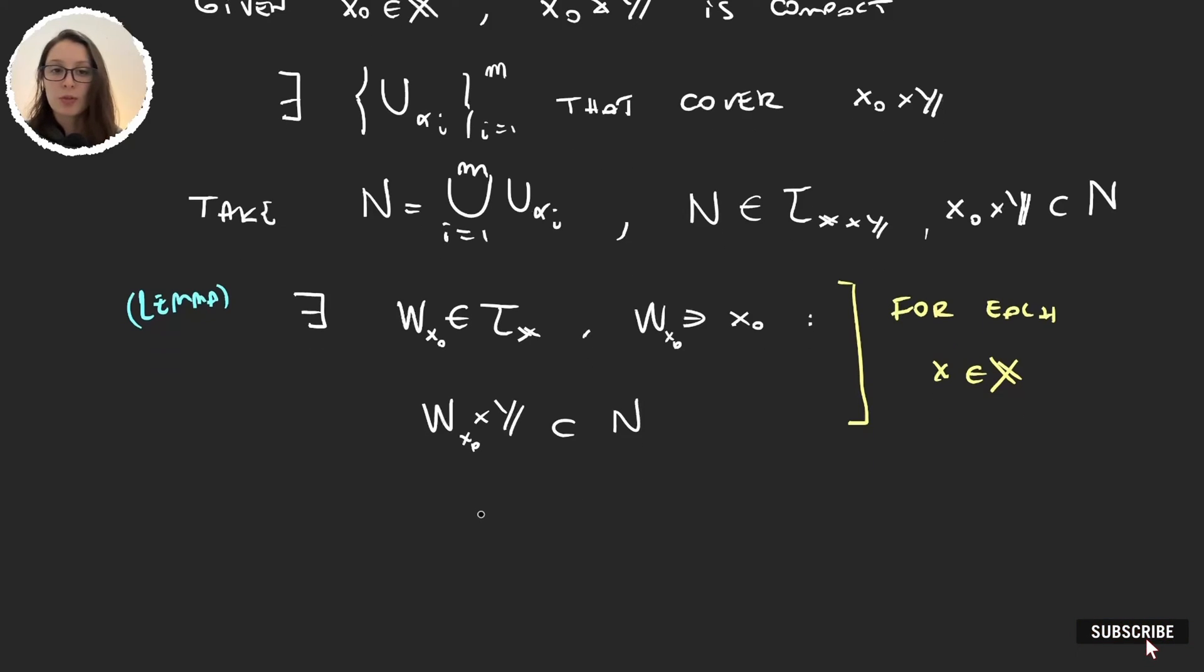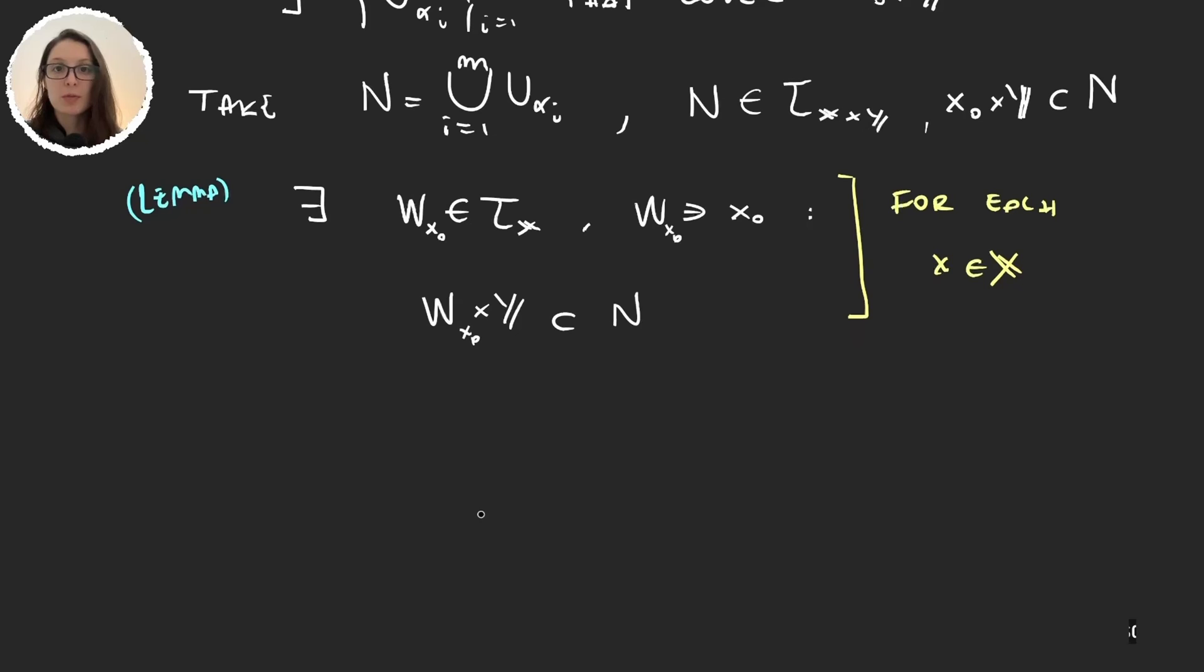If we take the collection of all the W's that exists for each x in X, that is W_x for x in X, this is a covering of X. But remember that X was compact.